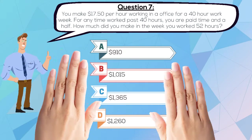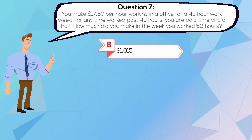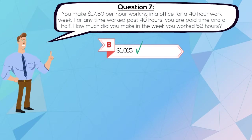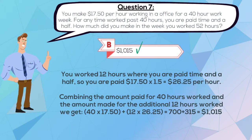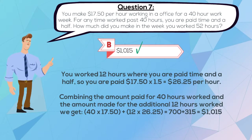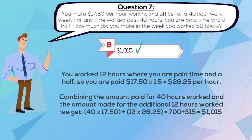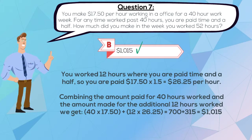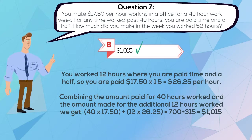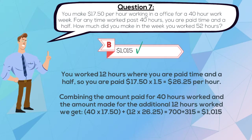The correct answer is B, $1,015. You work 12 hours where you are paid time and a half, so you are paid $17.50 times 1.5, which equals $26.25 per hour. Combining the amount paid for 40 hours of work and the amount made for the additional 12 hours worked, we get the answer of $1,015.